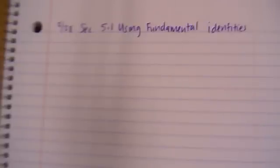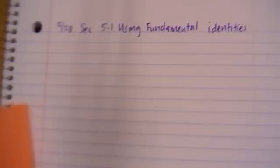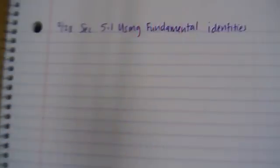Today we are doing using your trig identities. You're going to need this lovely chart right here. We're going to be talking about these three: Pythagorean identities, co-function identities, and even and odd identities.